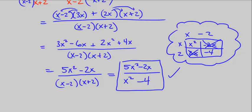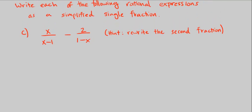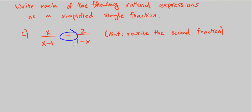Let's finally go to part C. Part C, again, we are adding and subtracting. So we need a common denominator. And the hint says to rewrite the second fraction. So this is the second fraction. So let's rewrite it. So we have x over x minus 1. That's the first one.